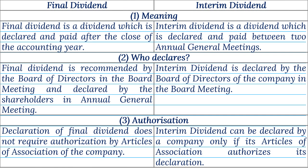Point 1 — Meaning: Final Dividend is a dividend which is declared and paid after the close of the accounting year. Interim Dividend is a dividend which is declared and paid between two annual general meetings. Point 2 — Who Declares: Final Dividend is recommended by the Board of Directors in the board meeting and declared by the shareholders in the Annual General Meeting. Interim Dividend is declared by the Board of Directors of the company in the board meeting.